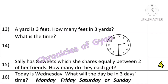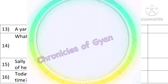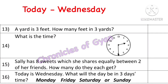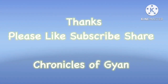Question 16: Today is Wednesday. What will the day be in 3 days' time? Today is Wednesday. Three days later: Thursday, Friday, Saturday — the third day is Saturday. So our answer is Saturday. For many more such videos, please do like and subscribe to my channel. Thank you.